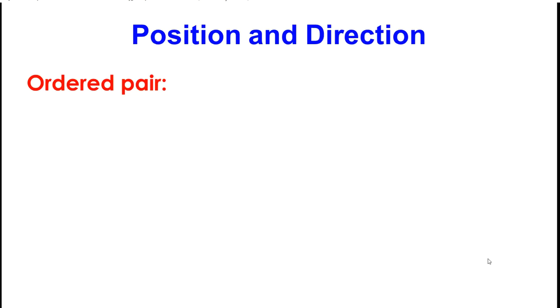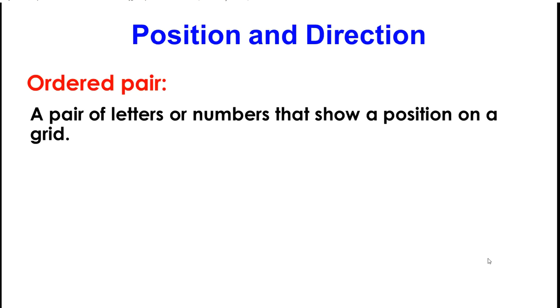Position and direction. Let's look at ordered pair. A pair of letters or numbers that show a position on a grid.